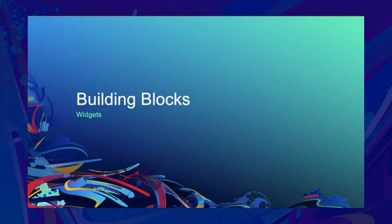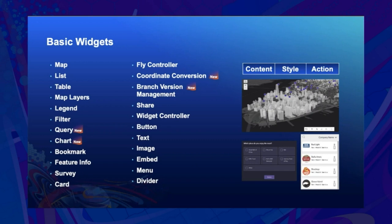There are two types of widgets: basic and layout. Layout widgets control the arrangement of basic widgets. Basic widgets carry functions like map, list, and survey. Four new widgets were recently added: Chart, Query, Coordinate Conversion, and Branch Version Management.